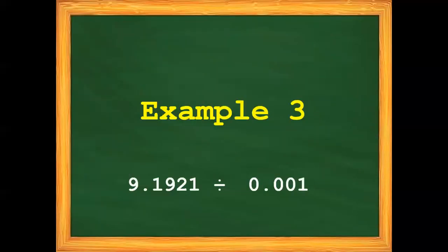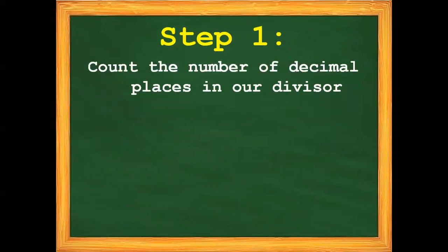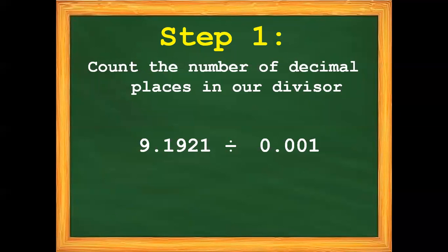Let's proceed with our third example: nine-and-one-thousand-nine-hundred-twenty-one-ten-thousandths divided by one-thousandth. What is our first step? Excellent. We have to count the number of decimal places in our divisor. What is our divisor in our third example? It is one-thousandth. And how many decimal places do we have in one-thousandth?